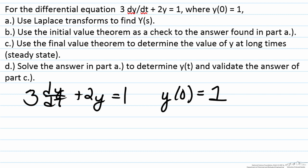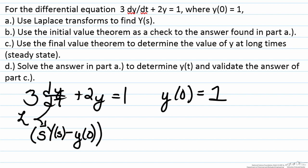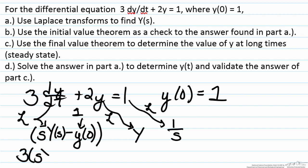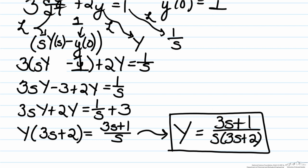To take the Laplace transform of this, the Laplace transform of dy/dt via the real differentiation theorem will equal s times the Laplace variable y of s minus y of zero, where y of zero is equal to one. The Laplace transform of little y is big Y, and the Laplace transform of a number is just that number over s. So when we put this all together we have three times s multiplied by the Laplace variable minus y of zero, which is one, plus two times the Laplace variable equals one over s. To solve for y we just need to do some rearranging and algebra. This is our answer in the Laplace domain.